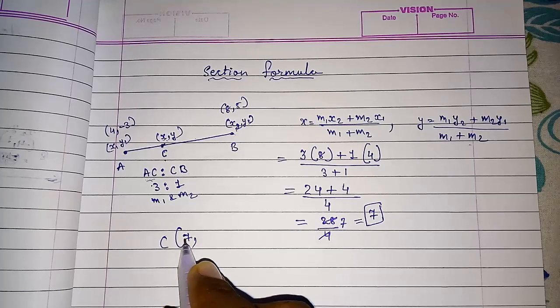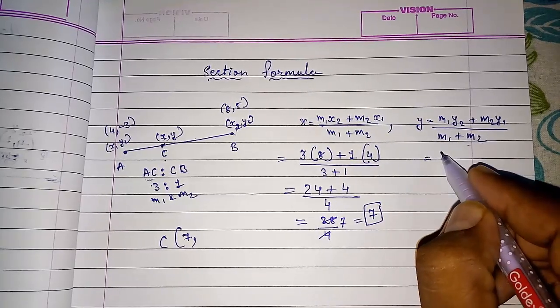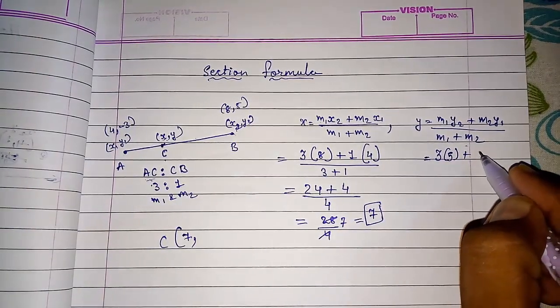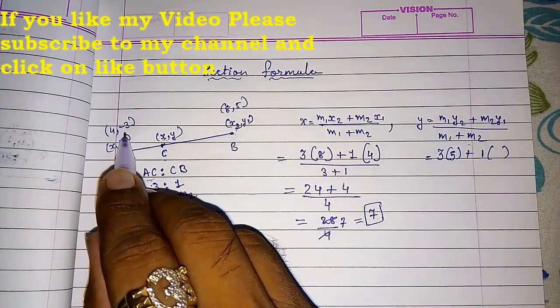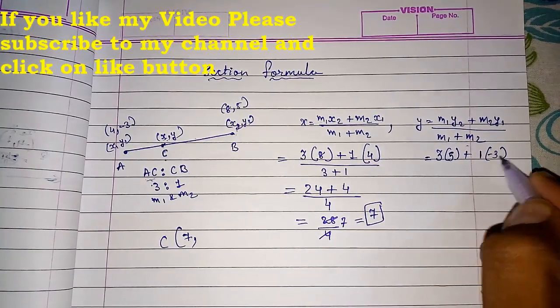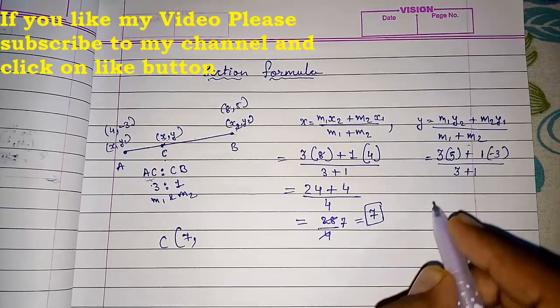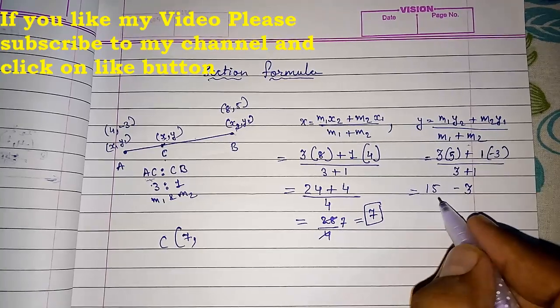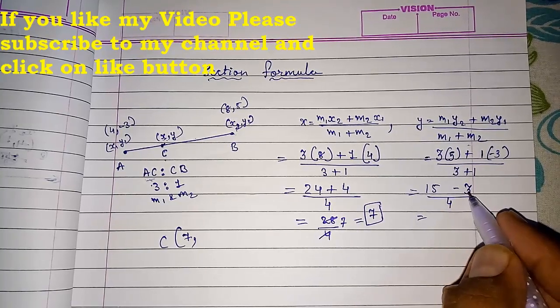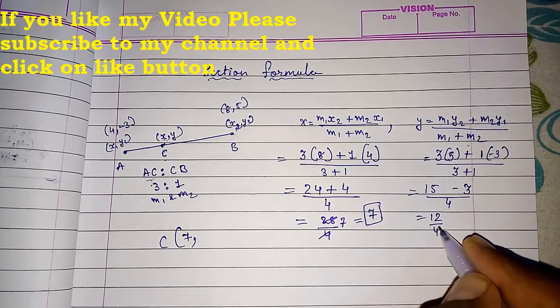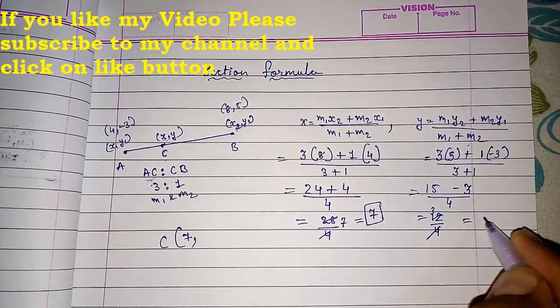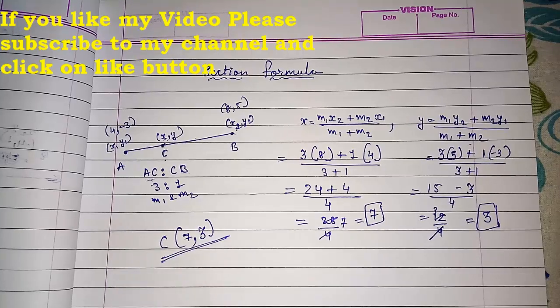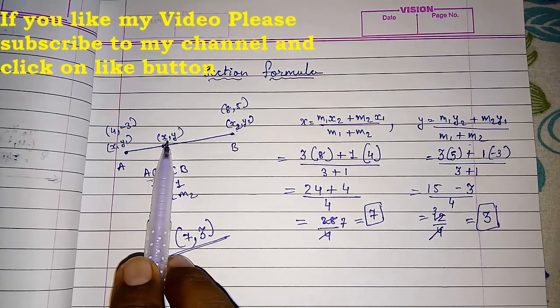So the coordinate first X is 7 and then Y. M1 that is 3, Y2 that is 5, plus M2 that is 1 and Y1 that is minus 3, upon 3 plus 1. So 3 times 5 is 15 minus 3 times 1 is minus 3, then by 4. So 15 minus 3 is 12 by 4. So the answer is 3. So here we are getting (7, 3).